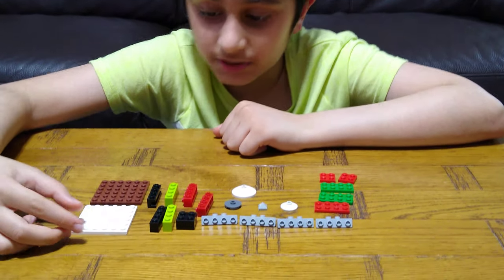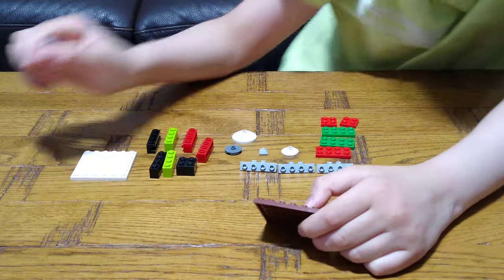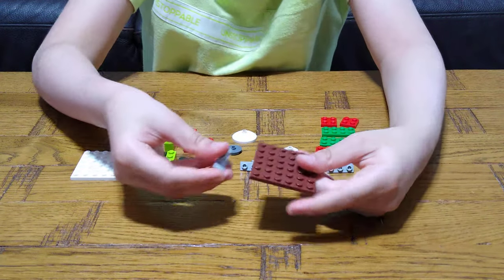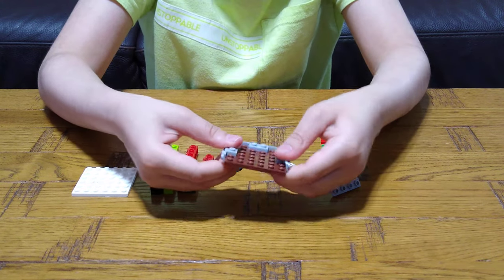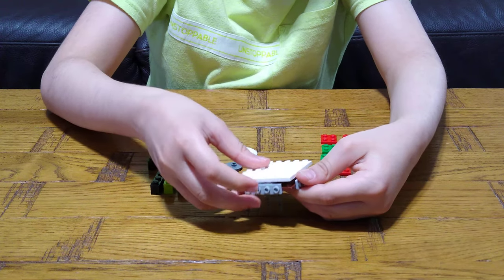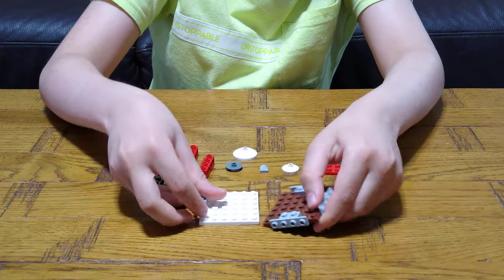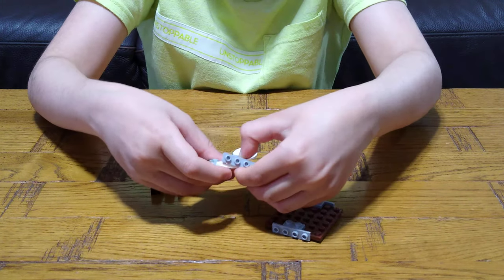First, let's build the bottom of our Beyblade. We will get four of these, just put them on like this. Then put them on here, and then put one at the bottom like that.